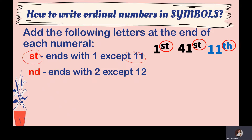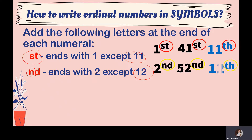If a number ends with 2, we add ND — except for 12. For example, 2ND (second) and 52ND. For a number ending with 12, we add TH instead, giving us 12th.